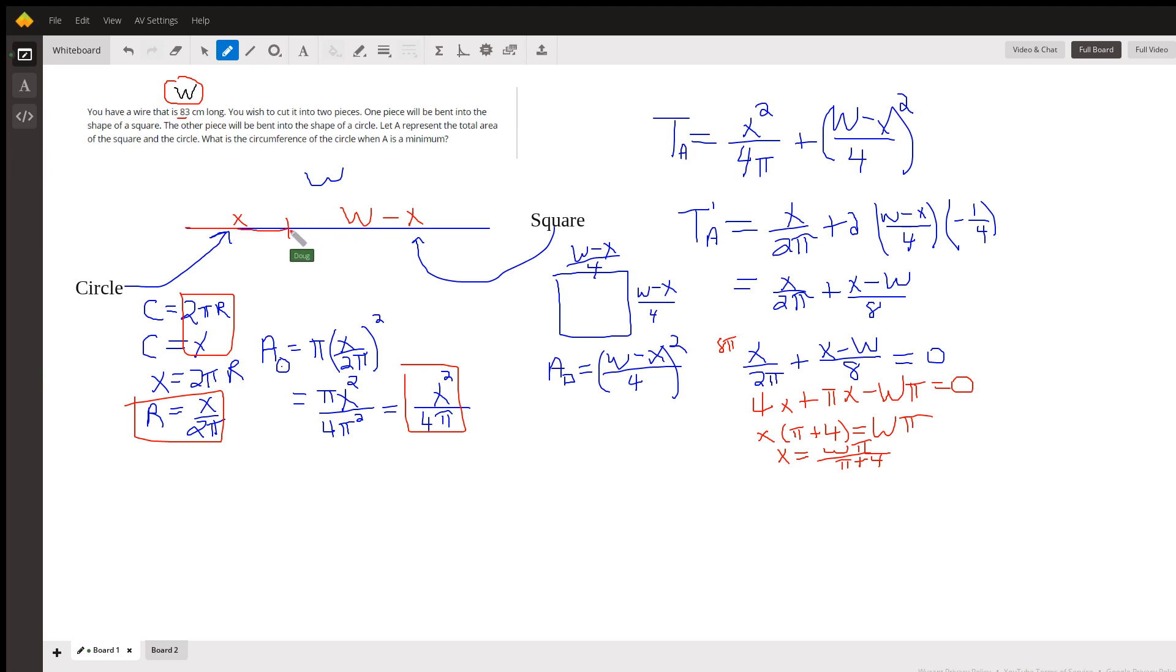The square, if I take this length W minus x and bend it into the shape of a square, all four sides have the same length. And it'll be this total perimeter, which is what this is, divided by 4 for each side.